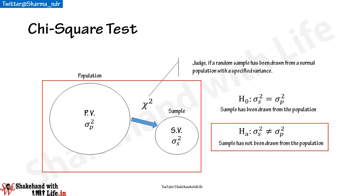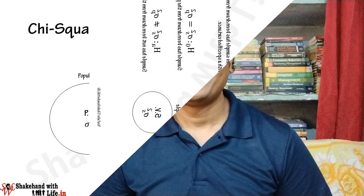On the contrary, the alternative hypothesis is assumed as Hₐ such that σ_s² ≠ σ_p², implying the sample variance and the population variance are not the same — or significantly different — and the sample has not been drawn from that population whose variance is σ_p².